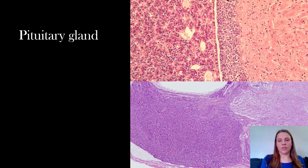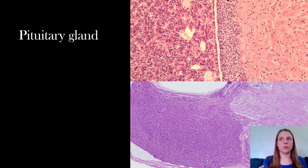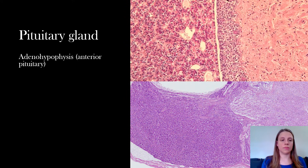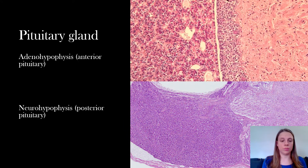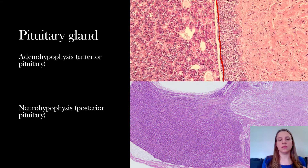I saved the pituitary gland for last because it has a lot going on. The pituitary gland is that little bean-shaped gland hanging from the hypothalamus in the brain. It's broken into two parts: the adenohypophysis, known as the anterior pituitary, and the neurohypophysis, also known as the posterior pituitary. The adenohypophysis is a true endocrine gland because it produces the hormones it releases. Over to the left of the line is the adenohypophysis — it's made up of glandular epithelium.